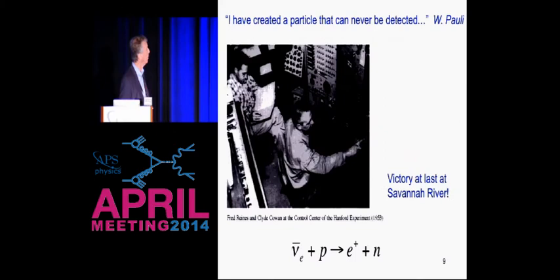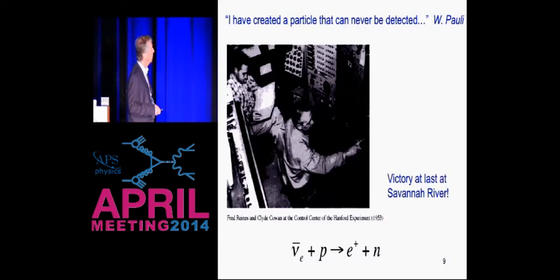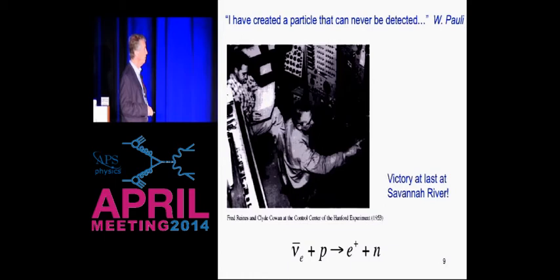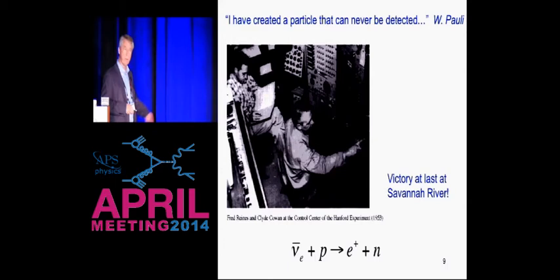The reality of neutrinos gradually became more and more accepted. And finally, in 1956, Reines and Cowan detected the neutrino. Pauli had either lamented or perhaps gloated, 'I have created a particle that can never be detected.' Not so. Two rather talented experimentalists detected it using inverse beta decay. This shows a picture at the Hanford reactor site where they started work, and they finally had complete victory at the Savannah River reactor not far from here.